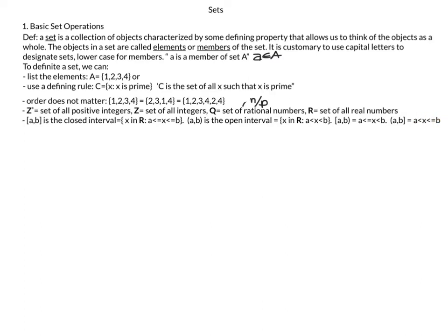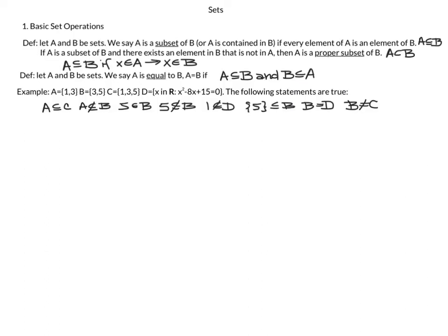Our next definition is of subset. If A and B are sets, we say A is a subset of B — or A is contained in B — if every element of A is an element of B, denoted with a C-like symbol with a line under it. If A is a subset of B and there exists an element of B that is not in A, then A is a proper subset of B — A is strictly contained in B. In symbols: A ⊆ B if X ∈ A implies X ∈ B.